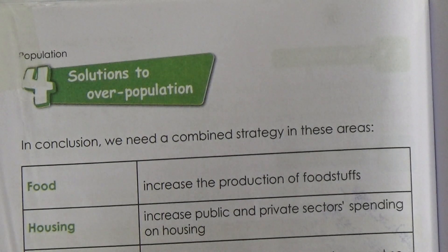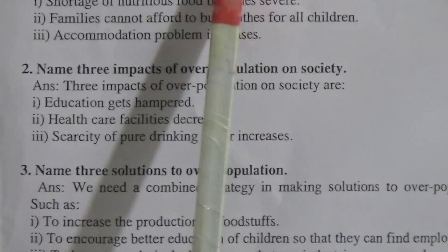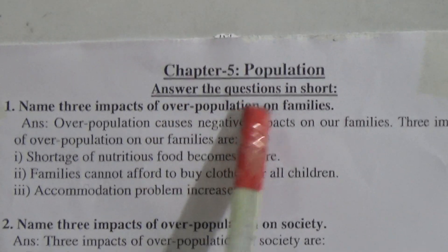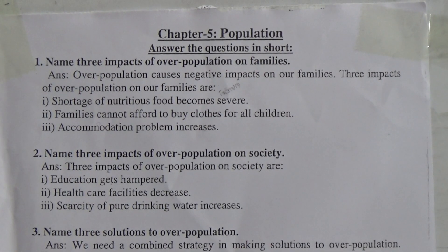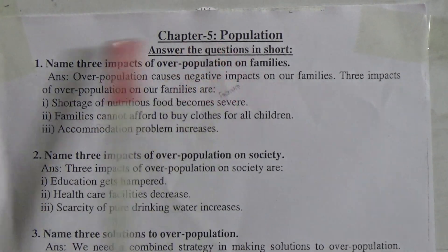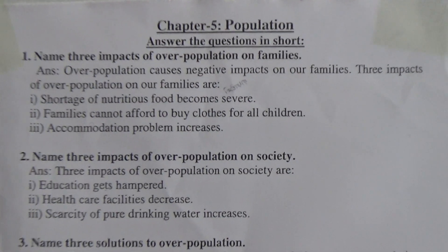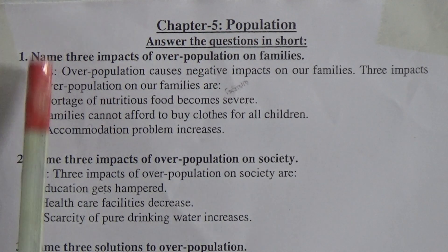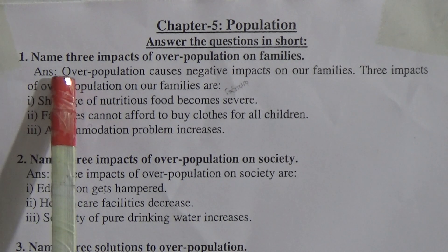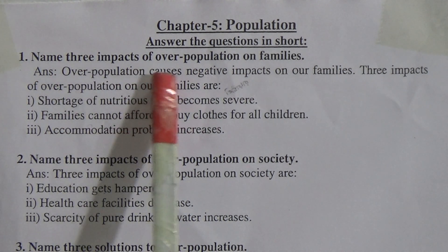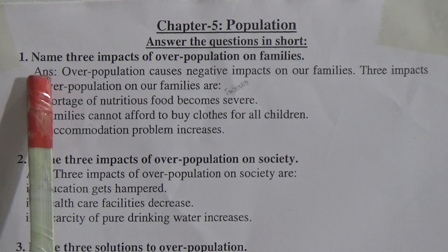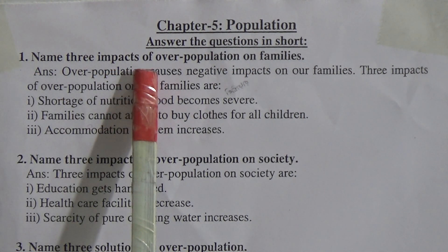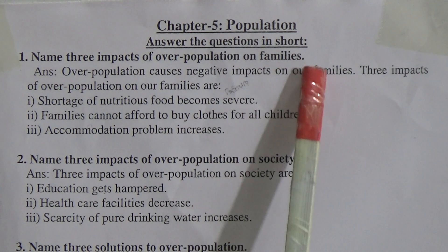Now let's start our short questions from Chapter Five: Population. These are all the short questions from Chapter Five. Question Number One: Name three impacts of overpopulation on families.